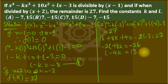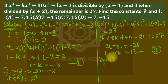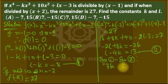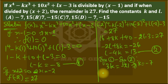We solve Equations 1 and 2 simultaneously by elimination. Subtracting Equation 2 from Equation 1 eliminates l, giving us -k minus (-4k) = -8 minus 13, so 3k = -21, therefore k = -7.